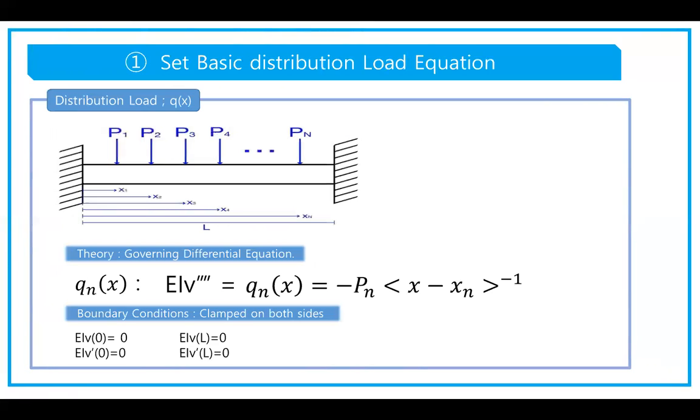For the first step, we set the basic distributed load equation. Normally, the distributed load would be q(x), but since these P's are concentrated forces, the equation becomes Pn times (x minus xn) to the power of negative one, being the fourth derivative of v.